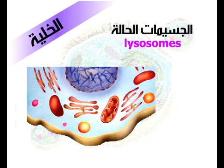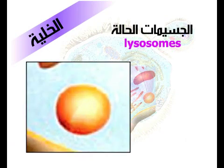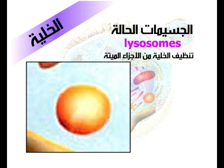الجسيمات الحالة. تراكيب تحتوي على أنزيمات محللة لها القدرة على هضم الجزيئات الكبيرة مثل البروتينات، وظيفتها تنظيف الخلية من الأجزاء الميتة.